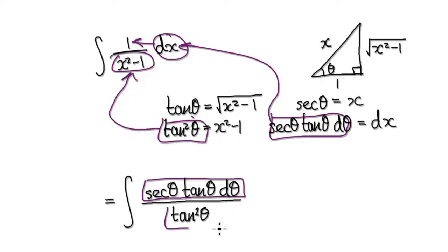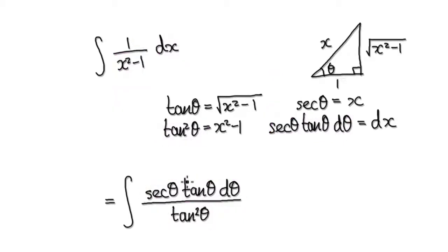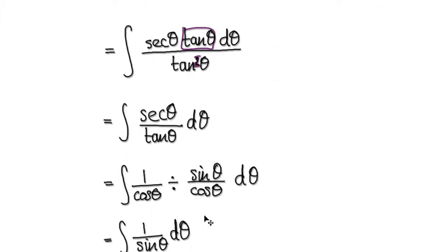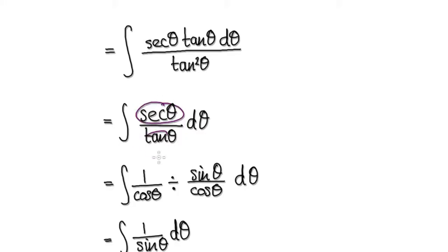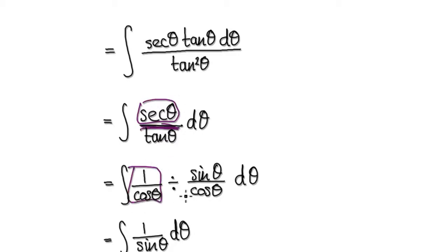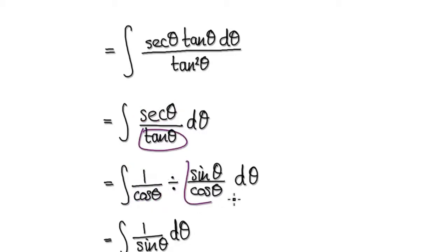Now we've got dx, so we can put this whole thing into the integral. That gives us this whole expression here. Now simplify — this cancels out with this. Whenever you have a mixture of secant and tan, break up everything in terms of cos and sin. So secant would be 1 over cos, and tan is sin over cos.